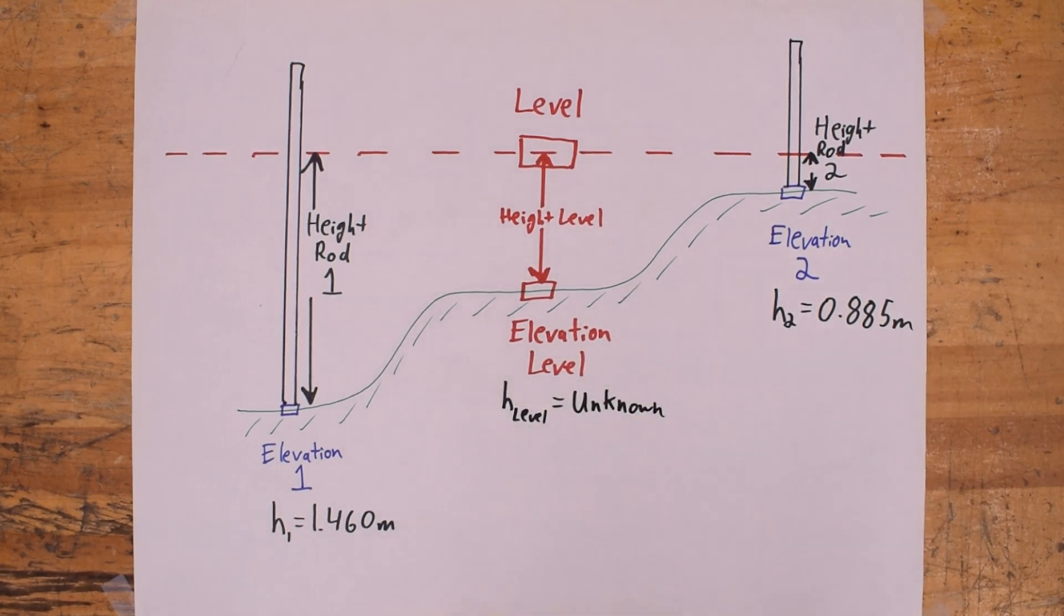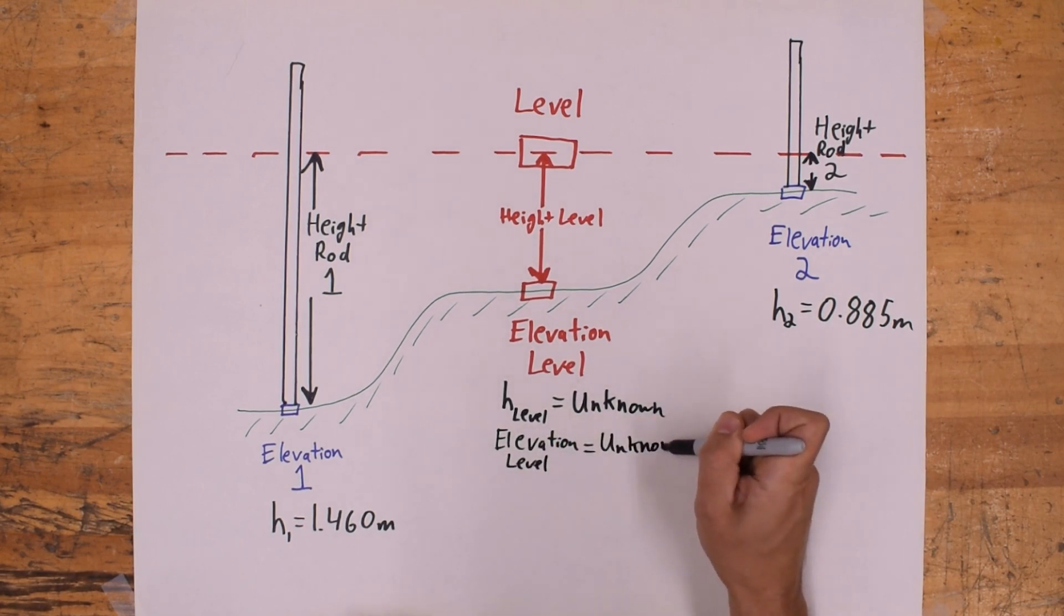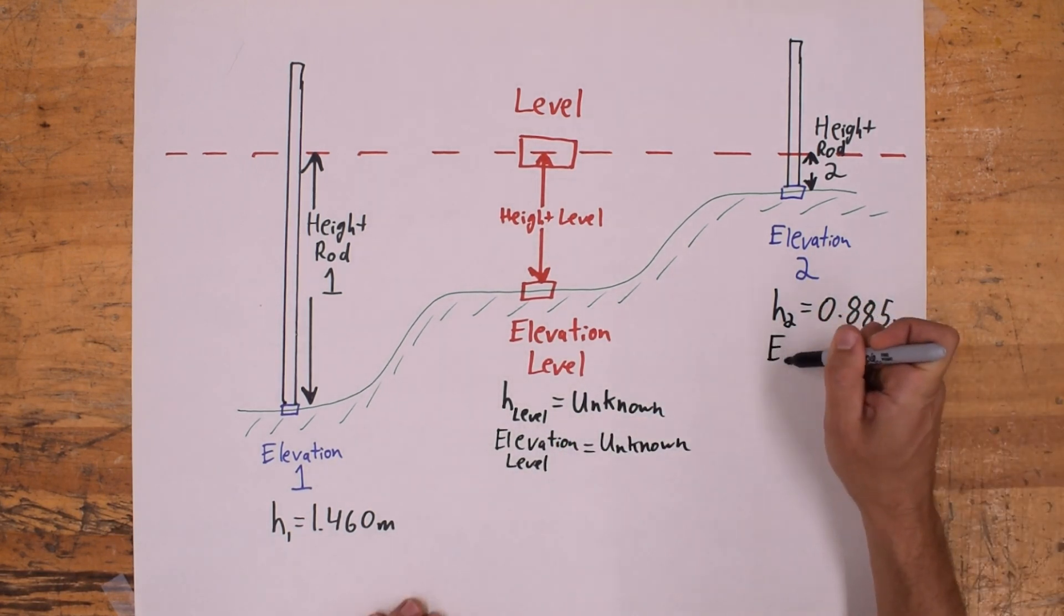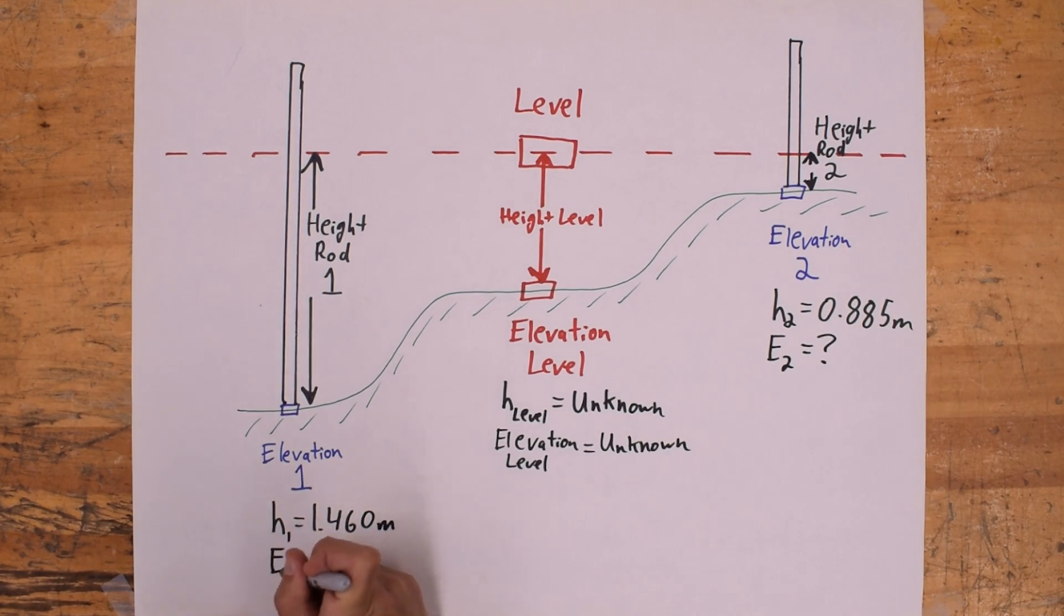The height of our level is unknown and the elevation of the point that the level is above is also unknown. And we don't know elevation 1 or 2 either.